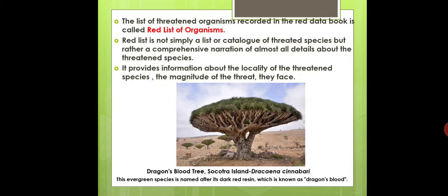The list of threatened organisms recorded in the Red Data Book is called the Red List of Organisms. The complete list of such organisms which are in threatened condition is recorded and collectively called the Red List of Organisms. It is not simply a list of threatened species but rather a comprehensive narration of almost all details.